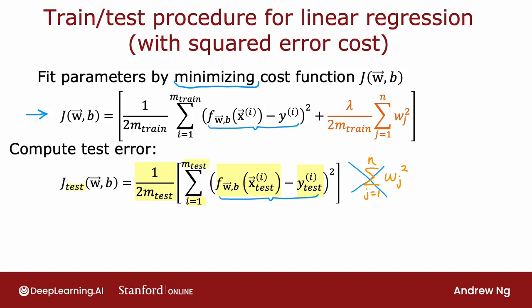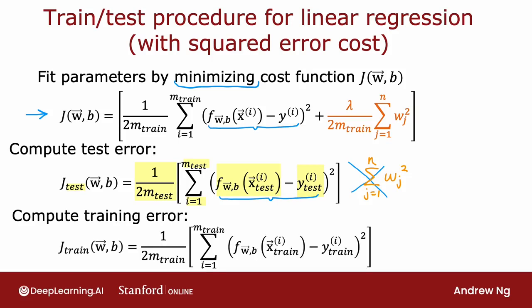One other quantity that's often useful to compute as well is the training error, which is a measure of how well your learning algorithm is doing on the training set. So let me define j train of wb to be equal to the average over the training set, 1 over 2m or 1 over 2m subscript train of sum over your training set of this squared error term. And once again, this does not include the regularization term, unlike the cost function that you are minimizing to fit the parameters.